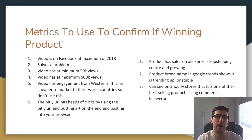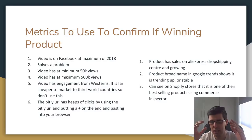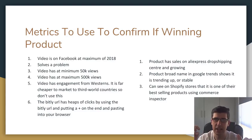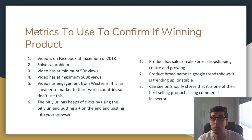It's important that we know the metrics to confirm if it's a winning product. This is mainly to do with Facebook. The video date should be a maximum of 2018. You can use the filter options on the side to look at 2017, 2018, or 2019, but you don't really want to go back to 2017 especially, because most people go for trending products - you definitely want to go for more recent products if they're currently trending.